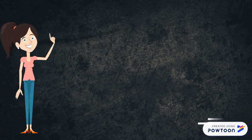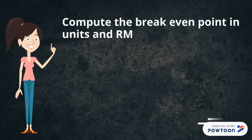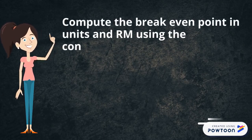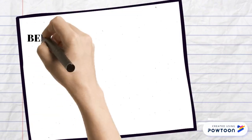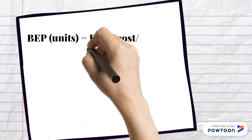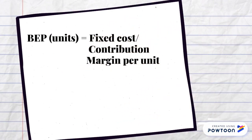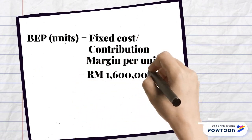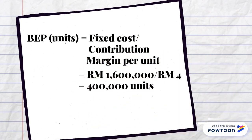First, we need to compute the break-even point in units and RM using the contribution margin approach. To calculate the break-even units, we need to divide fixed cost by contribution margin per unit. For this question, the fixed cost is RM1,600,000 and contribution margin per unit is RM4, so we will get 400,000 units for the answer.